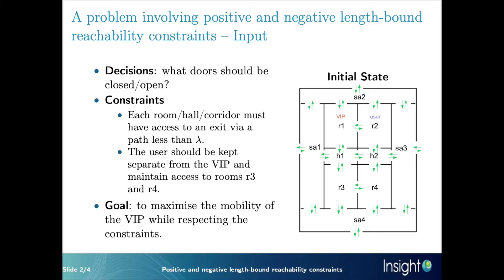In our example, we want to constrain the use of doors in such a way that each room and whole corridor has access to an exit door within a limited number of steps. We also want the user to keep access to rooms 3 and 4. Notice that all this access is granted in the initial state as doors can be used in both directions.